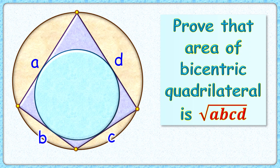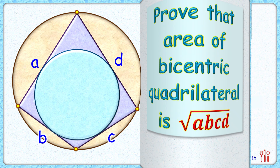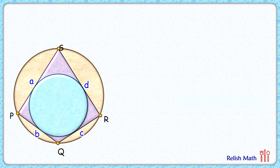Welcome everyone. Here, given to us is a bi-centric quadrilateral — it is cyclic with respect to the brown circle and tangential with respect to the blue circle. Given the sidelines of the quadrilateral are a, b, c and d, we have to prove that the area of this quadrilateral is square root of a·b·c·d. Let's check this simple proof.